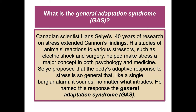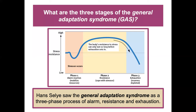What is the general adaptation syndrome? A Canadian scientist studied animals' reactions to various stressors such as electric shock and surgery, helping make stress a major concept in psychology and medicine. He proposed that the body's adaptive response to stress is so general that we have a reaction to whatever the stressor is — like a burglar alarm — and he named this response the general adaptation syndrome, a three-phase process of alarm, resistance, and exhaustion.